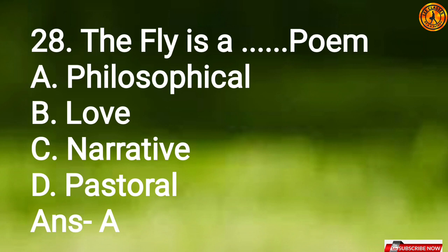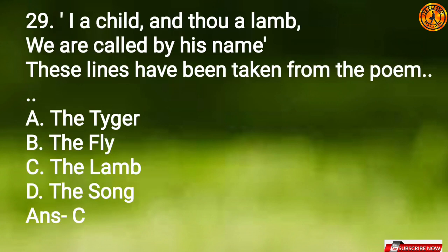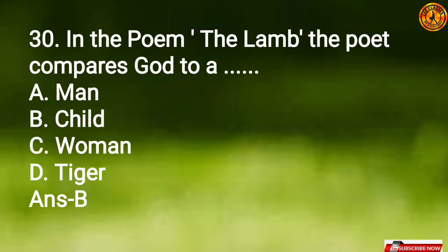Question 28: 'The Fly' is a philosophical poem. Question 29: 'I a child and thou a lamb, we are called by his name' — these lines have been taken from the poem Option C, 'The Lamb.' Question 30: In the poem 'The Lamb,' the poet compares God to Option B, a child.